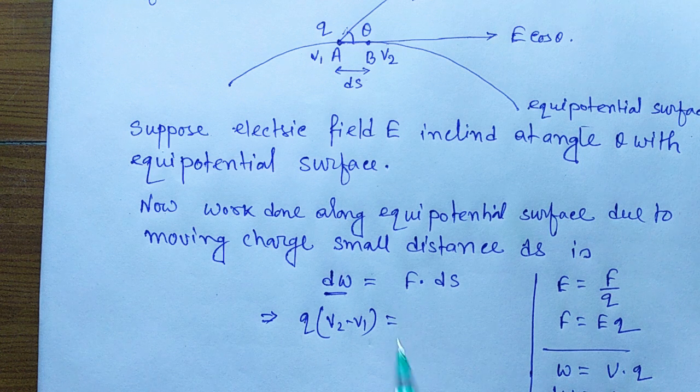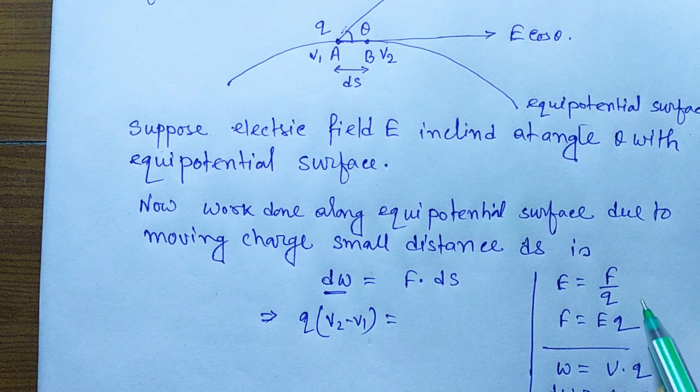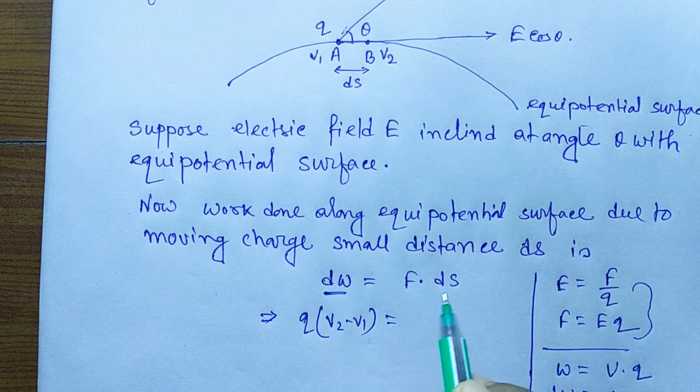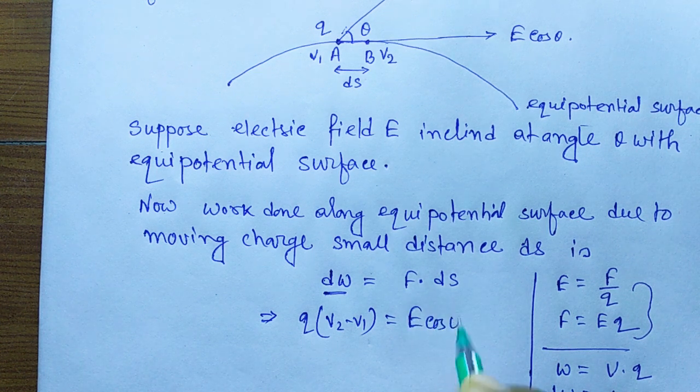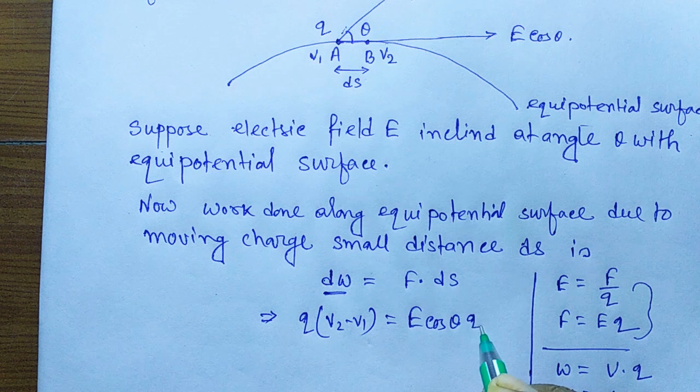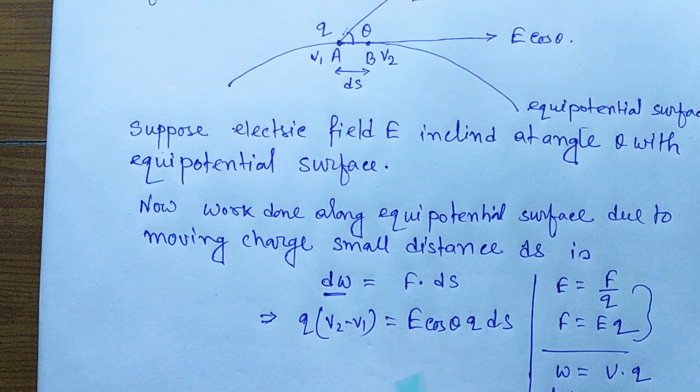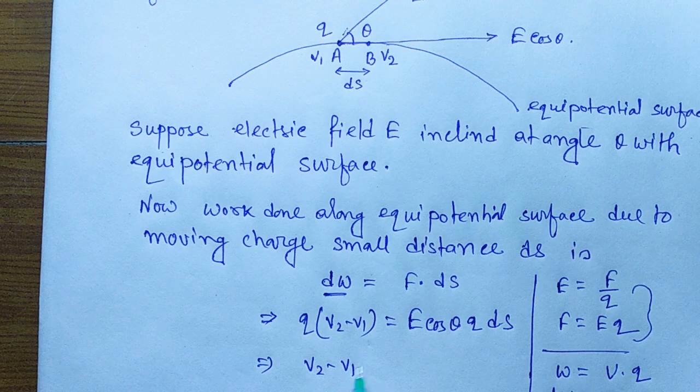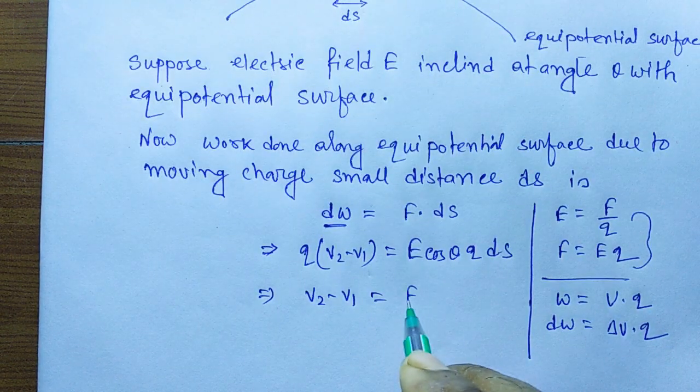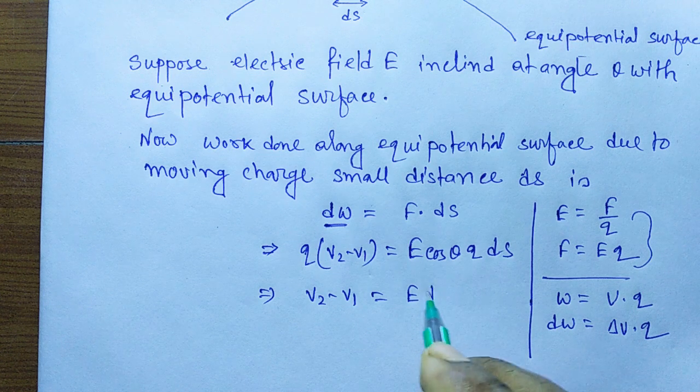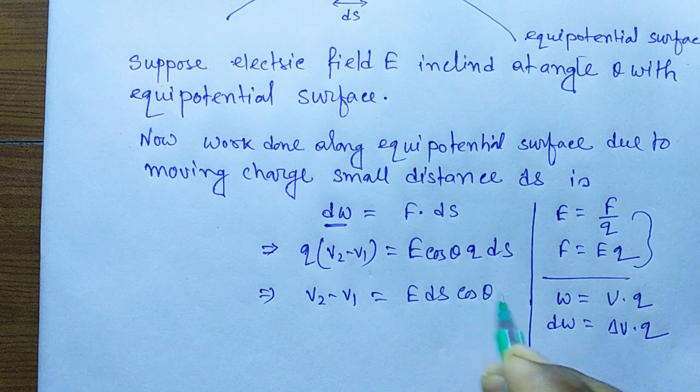In place of F, we can write E cos theta Q ds according to that relation. Therefore, V₂ minus V₁ equals E ds cos theta.